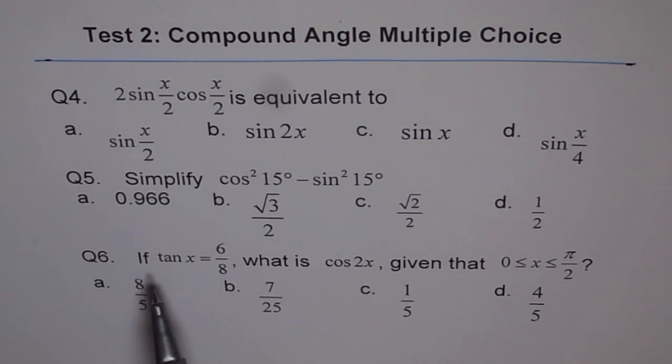Question 6: If tan(x) equals 6/8, what is cos(2x), given that x is between 0 and π/2? That is, first quadrant.